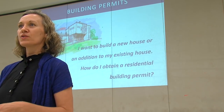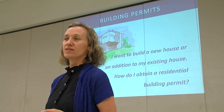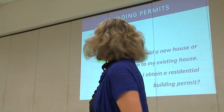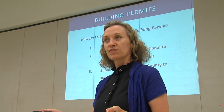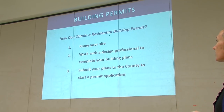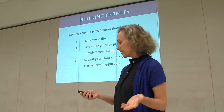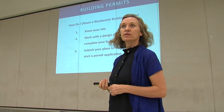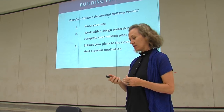So the Planning Department has covered land use and zoning. Now at this point you have an idea of what you want to design. The question is: I want to build a new house, I want to build an addition — how do I obtain a residential building permit? I'm going to try to answer that question in a simplified way. I broke it down into three basic steps. Number one: know your site. Number two: work with a design professional to complete your building plans. And three: submit your plans to the county to start a permit application.